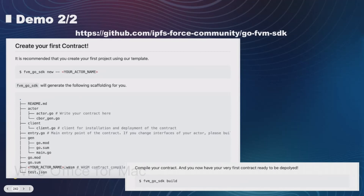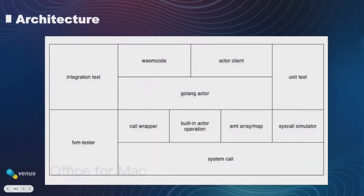Once you have finished coding, you can use the build command to compile the native Wasm contract. As we are more on the tooling side, the technology stack we use leans more towards Go and Rust language-based libraries.